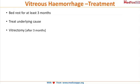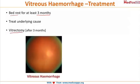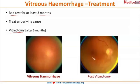For vitreous haemorrhage in general, you ask the patient to have bed rest for at least three months so that the haemorrhage can absorb on its own, and then you treat the underlying cause. If it does not absorb in three months, you proceed with a procedure called vitrectomy. Once the haemorrhagic vitreous is removed by vitrectomy, you are able to see the features of the retina very clearly, as seen in this post-vitrectomy image.